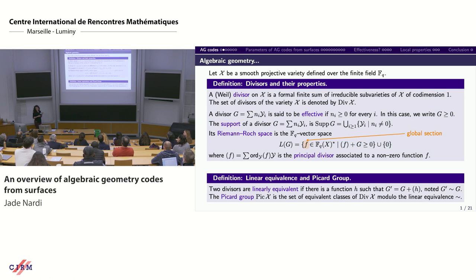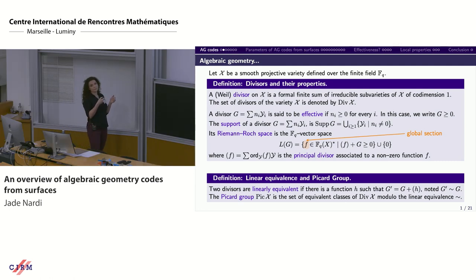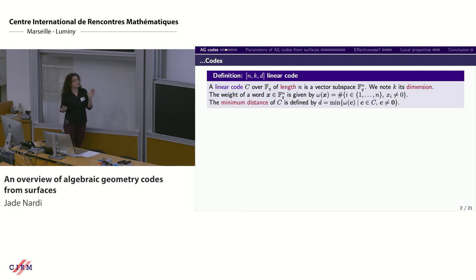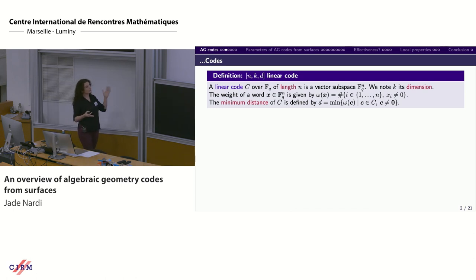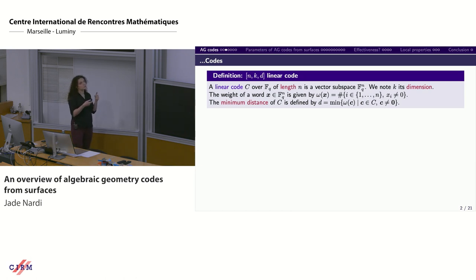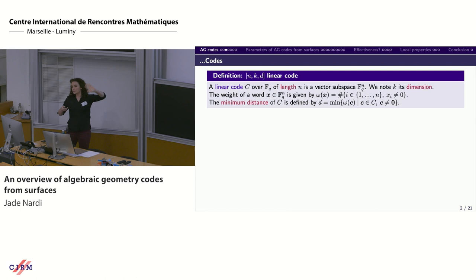From these definitions we can define an algebraic geometry code for any dimensional variety. A linear code over F_q of length n is a vector subspace of F_q^n, with dimension k. The weight of a vector is the number of non-zero coordinates, and the minimum distance is the minimum weight of a non-zero codeword.